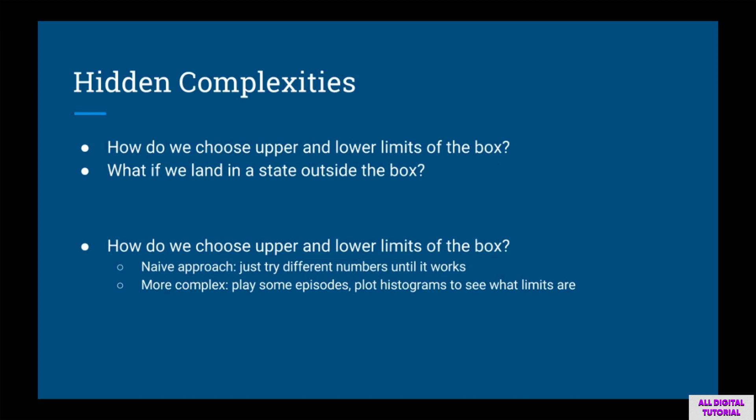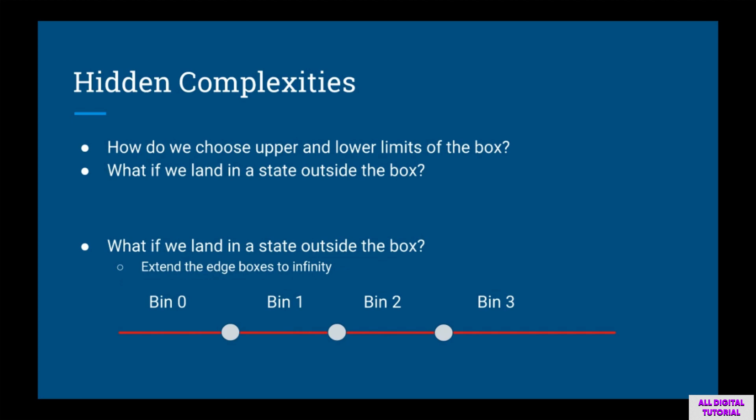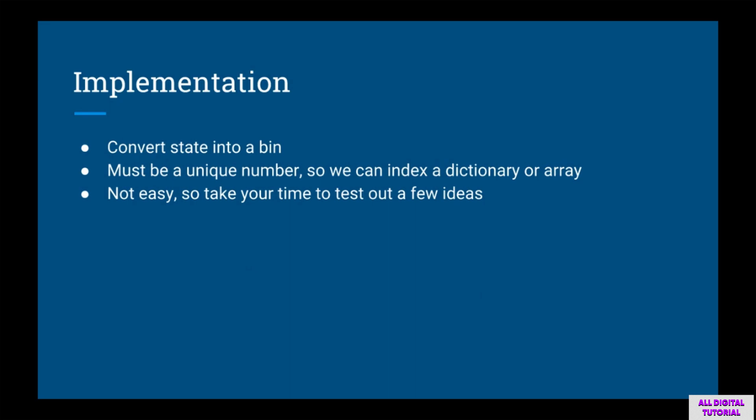This idea of cutting up the state space into boxes sounds simple but there are hidden details. How do you choose the box size and the lower and upper limits? What if a state we observe is outside the box? For the first question, we can take a naive approach and try different numbers until it works, or play a few thousand episodes and plot histograms of each state variable. For the second question — if a state is outside the box — we can just extend the boxes on the outer edges to infinity.